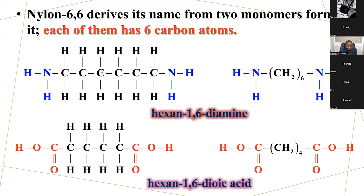We can say this is carbon 1 — it's the first carbon and there's an amine group. On the sixth carbon, there's also an amine group. That's why we have the name hexane-1,6-diamine.